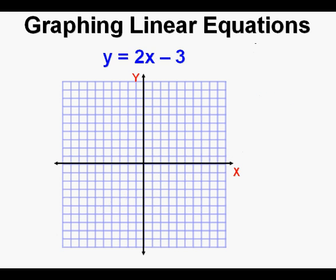Let's look at an equation in slope-intercept form, with the y variable by itself on one side of the equation. The slope-intercept form is y equals mx plus b, where m is the slope and b is the y-intercept. I like to think of m as climbing and b as the beginning of the y-intercept.